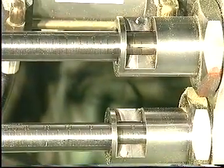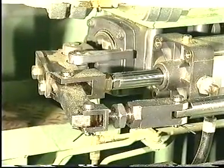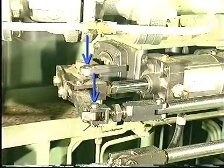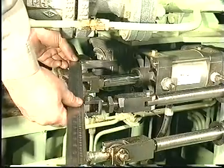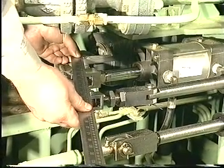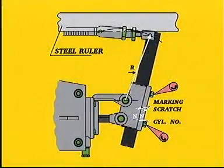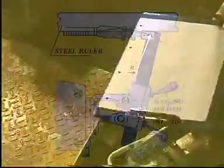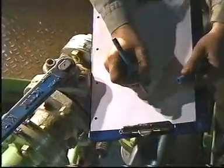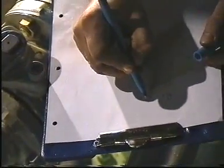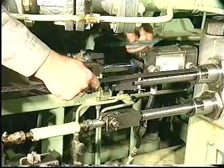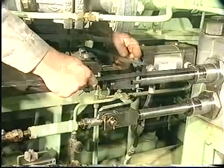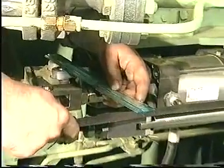Make sure that the VIT index is set at zero. Measure distance R between the two pivoting points and note down the result. Measure distance L between the pivoting point and the centre line of the VIT rack and note down the result.